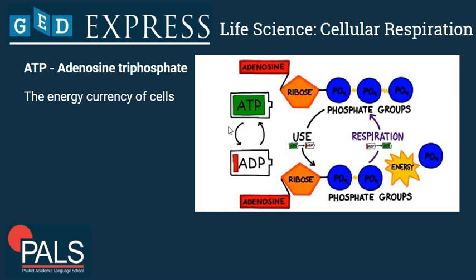As a result, we get ADP, which doesn't contain a lot of energy anymore, and a free phosphate group. This ADP and the free phosphate group can be recycled in respiration to produce ATP again. And ATP can again be used for any process in the cell that requires energy.